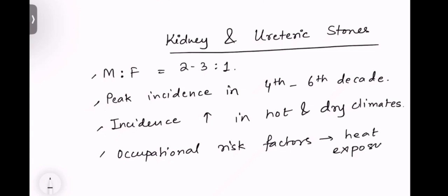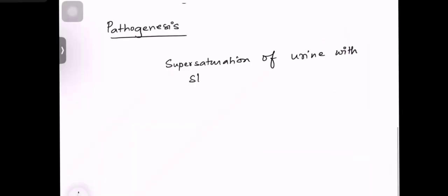Kidney and ureteric stone epidemiology: more common in males than in females, 2 to 3 is to 1, happens in 4th to 6th decade of life. Incidence increases in hot and dry climate. Occupation that is more in relation to kidney and ureteric stones are heat exposure and dehydration. Other factors are obesity and diabetes mellitus.